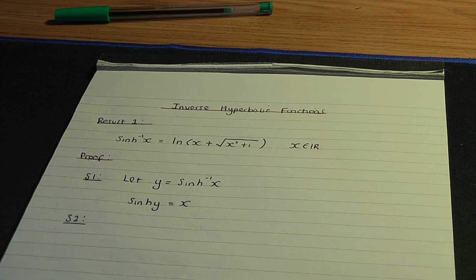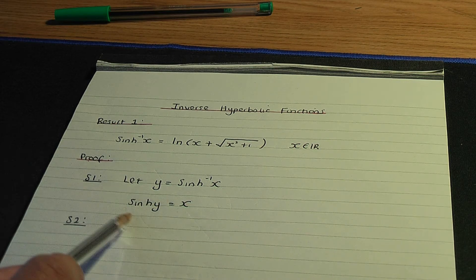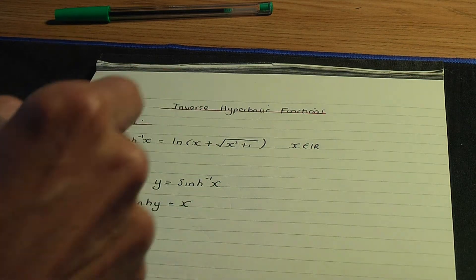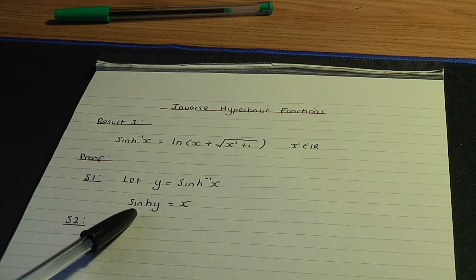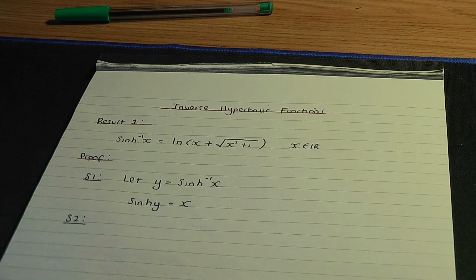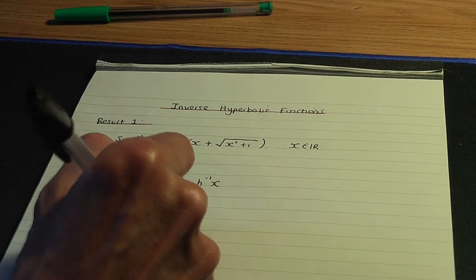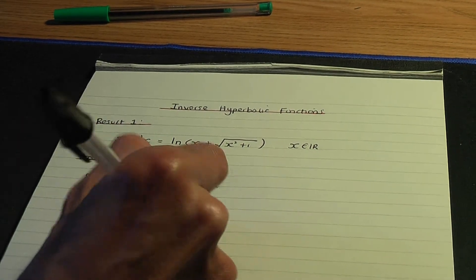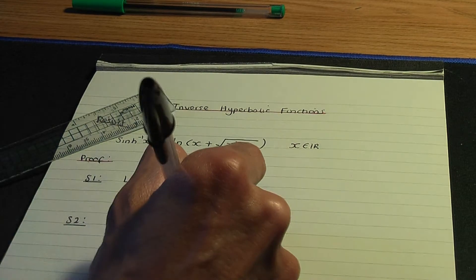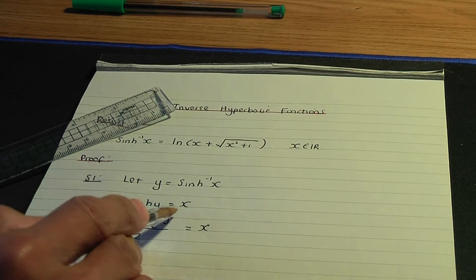Step number two: I use the definition of the hyperbolic sine function and find an expression for hyperbolic sine y. Remember the definition of hyperbolic sine x was e to the x minus e to the minus x over two. So by using that definition, hyperbolic sine y equals e to the y minus e to the minus y, divided by two, and that equals x.